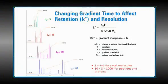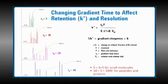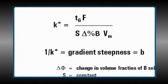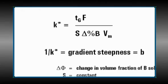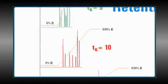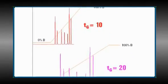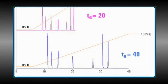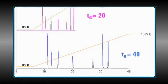We'll talk about gradient steepness first. Here we see our gradient retention equation again and its relationship to gradient steepness. You can think of gradient steepness B as being analogous to percent organic in isocratic separations. When gradient steepness is decreased, retention increases. When gradient steepness is increased, retention decreases. Also, as gradient steepness is decreased, peak width increases and peak height decreases.